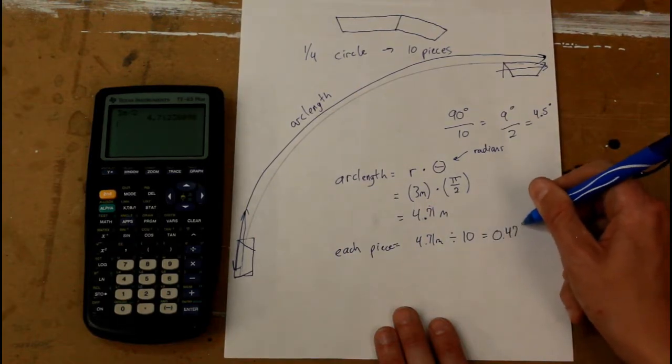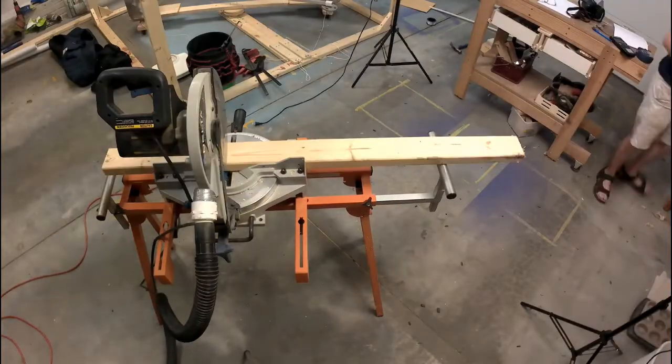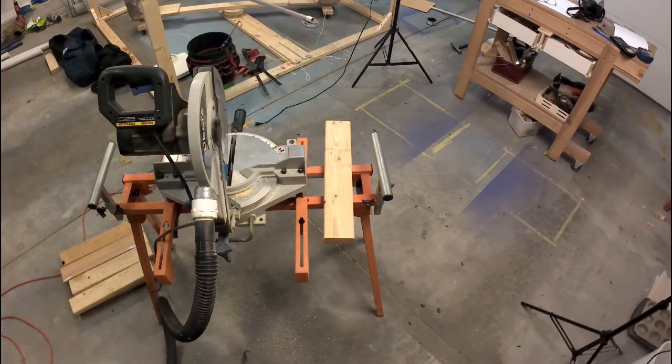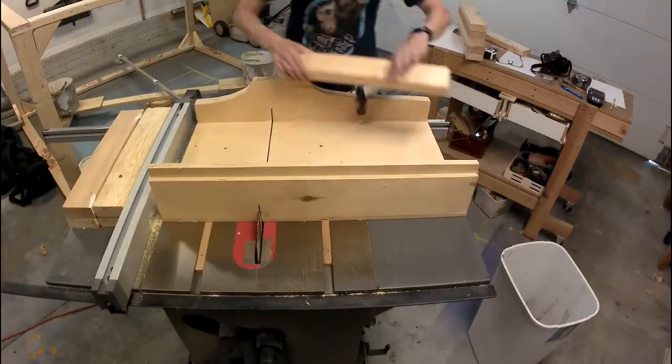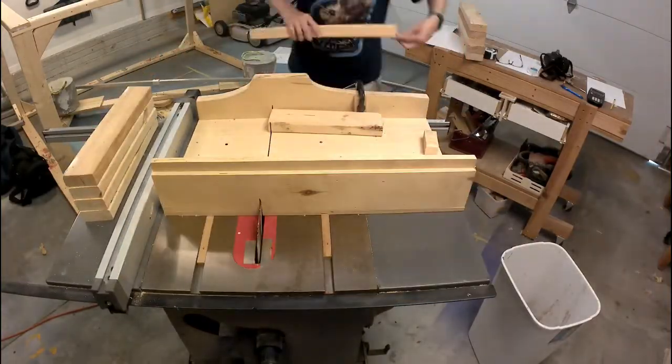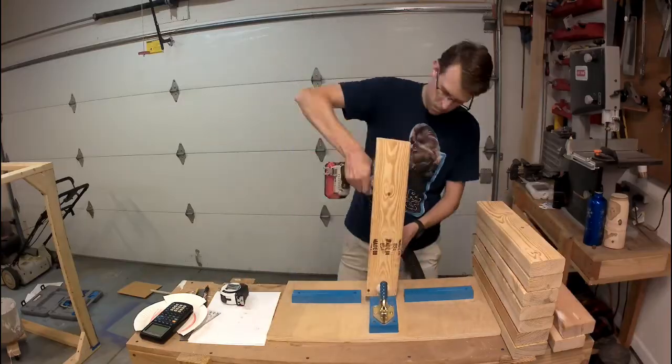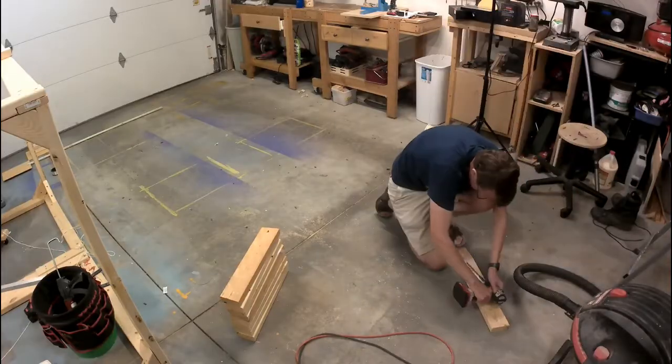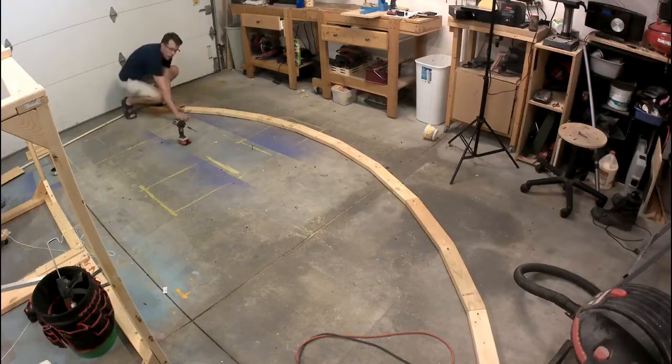I started out by cutting everything to length on the miter saw. Then used a small block on my table saw sled to angle the board by 4.5 degrees. And then set up another jig to get all these boards cut to the same angle and the same length. Next I drilled holes for pocket screws on the end of each board. That'll allow me to attach them together. And finally laid them out and screwed them together with pocket screws.